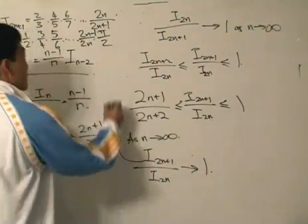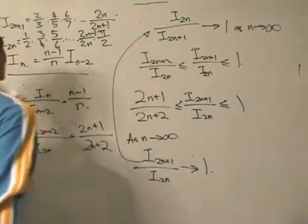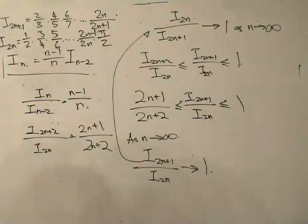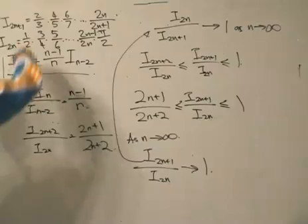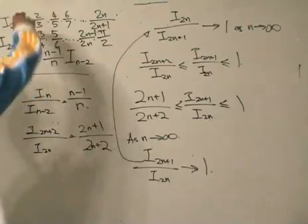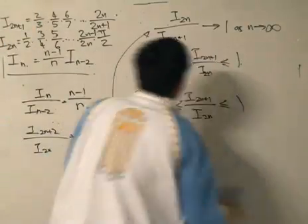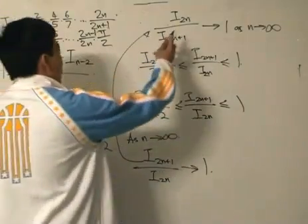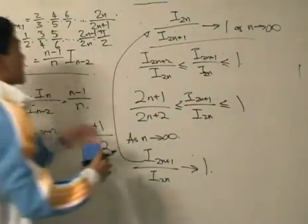So i_(2n+1) divided by i_(2n) tends towards 1, and that would be the equivalent to this one over here. So finally, the last step or the last piece of the puzzle, we're going to simply divide these two, because this is what we have, this is a fact that we're going to use - that this tends towards 1 as n tends towards infinity.